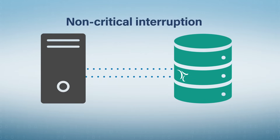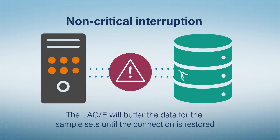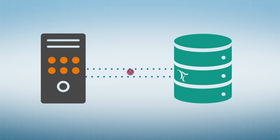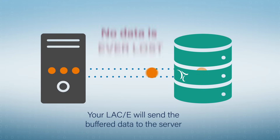If a non-critical temporary network interruption occurs between your LACE and the Empower server, the LACE will buffer the data for the sample sets until the connection is restored. Once the network connection is back, your LACE will send the buffered data to the server. No data is ever lost.